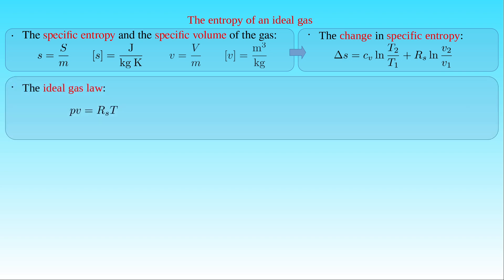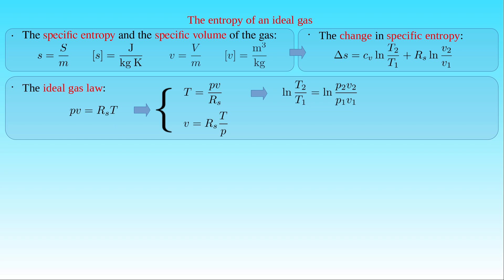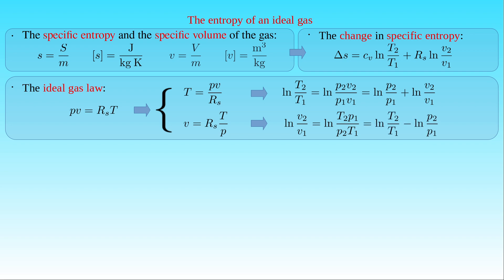If the ideal gas law is formulated in terms of the specific volume, it states that P times V equals R_S times T. We express the temperature T as P times V over R_S, and the specific volume V as R_S times T over P, and substitute these into the entropy equation. The natural logarithm of T2 over T1 equals the logarithm of (P2·V2)/(P1·V1), which equals the logarithm of P2/P1 plus the logarithm of V2/V1. Similarly, the logarithm of V2/V1 equals the logarithm of (T2·P1)/(T1·P2), which equals the logarithm of T2/T1 minus the logarithm of P2/P1.